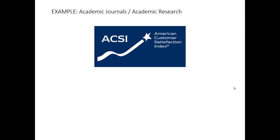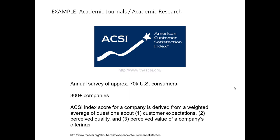Not all academic research resides in academic journals. For example, let's take a look at the American Customer Satisfaction Index (ACSI). The ACSI is an annual survey of approximately 70,000 US consumers covering over 300 different companies. Its objective is to longitudinally track how satisfied customers are with the various companies they buy products from, using both online and telephone-based surveys to measure people's expectations, perceived quality, and perceived value to create a composite satisfaction index score ranging from 0 to 100. Marketers often use the ACSI to benchmark themselves against industry competitors.